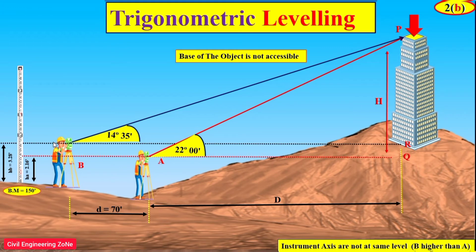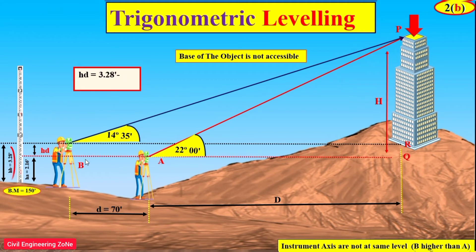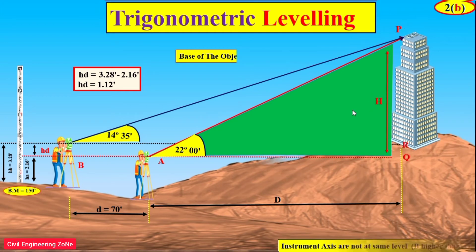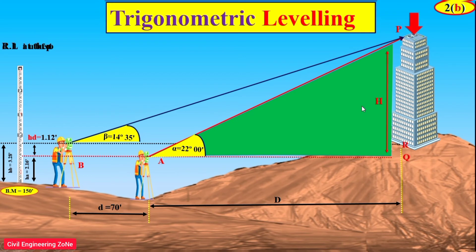To find the reduced level of the top of the building, we find the difference between the line of collimation of instrument station B minus the line of collimation of instrument station A. From this difference we can get the value of HD.